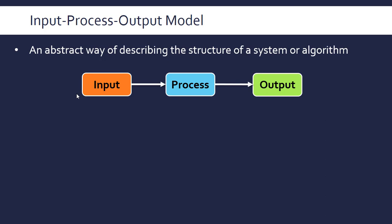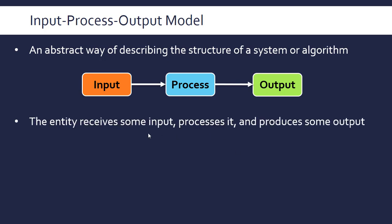This could be a computer system, it could be a piece of software, it could be an actual algorithm within some software. It doesn't actually matter, that's why it's abstract. So as I say, take some input, process it and produce some output.